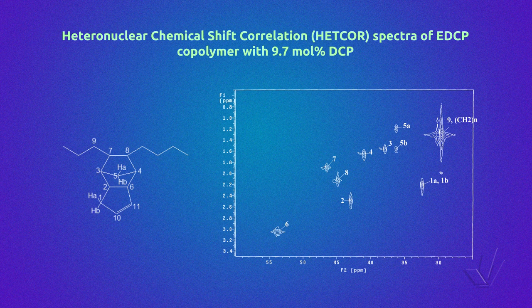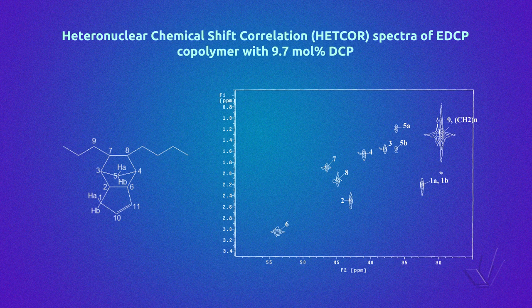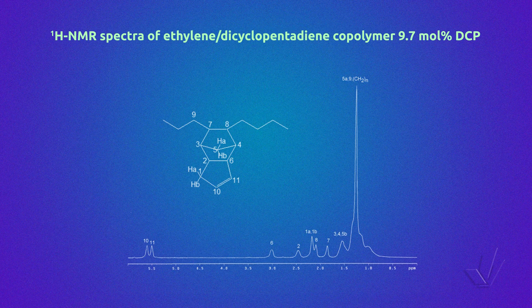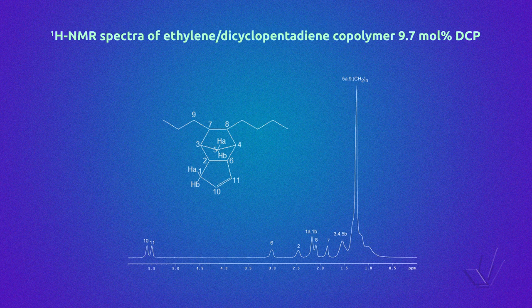The reactivity ratios and the average comonomer sequence length had also been calculated. Heteronuclear chemical shift correlation of EDCP copolymer with 9.7% DCP was done to assign the peaks of the proton NMR spectrum. In this technique, carbon-13 NMR is correlated with the proton NMR. Here we have the proton NMR of this copolymer. The assignment of all the peaks was only possible thanks to the 2D HSQC spectrum, because in the proton spectrum the resonances were more difficult to determine due to the superposition of signals. So in this case, the interpretation of the carbon-13 NMR helped to assign the proton spectrum.